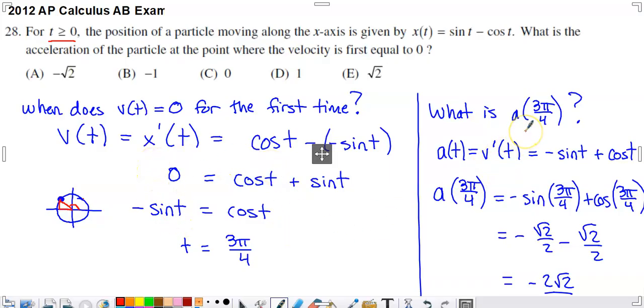So what is the acceleration at that time? So now we need to produce our acceleration function. So we're going to take the derivative of our velocity function right here. So the derivative of cosine of t is negative sine of t. I'm going to add on the derivative of sine of t. So plus a cosine of t. From there, I just need to evaluate at 3π by 4.